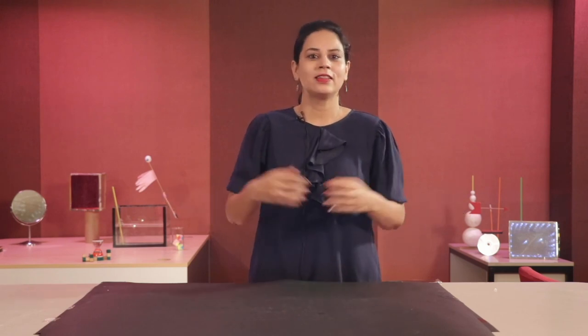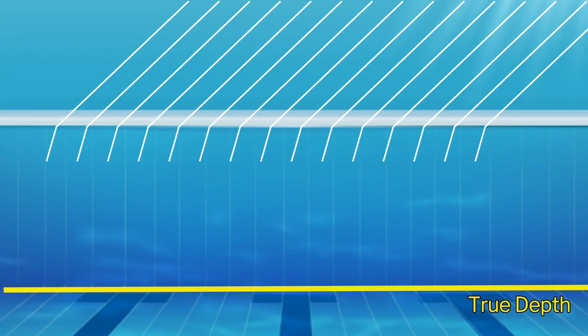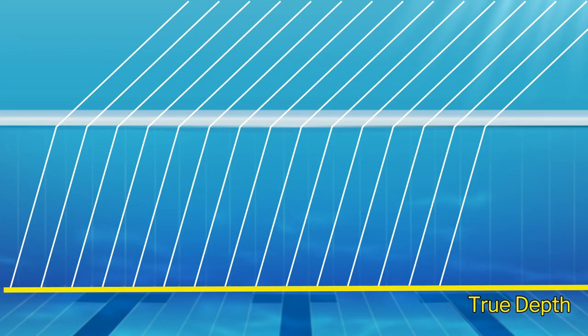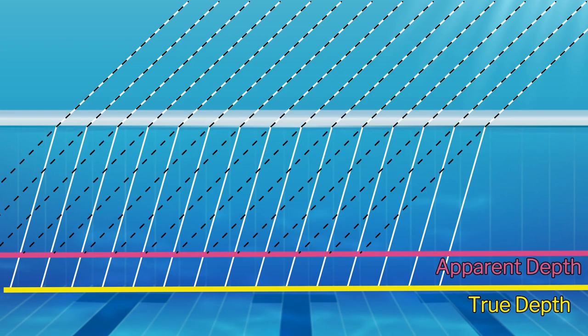How do we explain this? The transmission of light across a boundary between two media is accompanied by a change in speed. This phenomenon is referred to as refraction of light. This explains why water in a swimming pool appears less deep than its actual depth — as light rays enter from air to water medium, the speed changes, causing the light ray to bend inward.